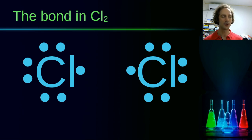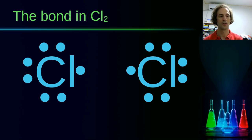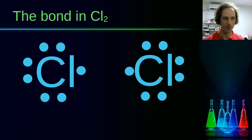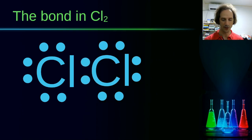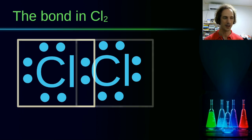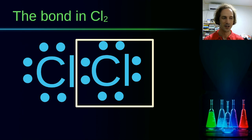If we take a look at two chlorine atoms, both have 7 electrons in their valence shell instead of the ideal 8. When we draw the Lewis structures, we draw 3 pairs of electrons — so 6 electrons are paired — and 1 electron is unpaired. Moving the two chlorine atoms close together, these two lonely electrons form a pair between them, and now each chlorine atom has 8 electrons. Sharing is caring, and this is how the two chlorine atoms bond together.